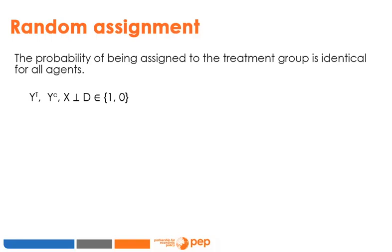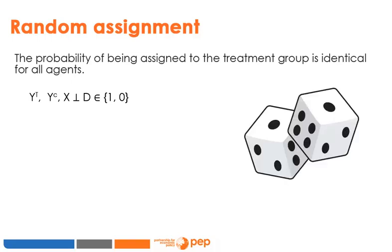For example, if you roll a die to assign units to treatment with a 1/6 probability, knowing whether a subject is treated provides no information about the subject's potential outcomes or background attributes. This gives us statistical independence.